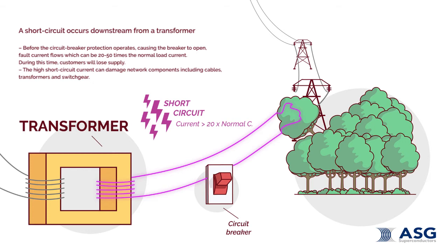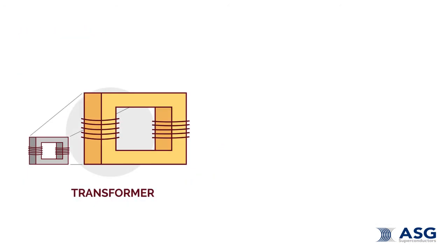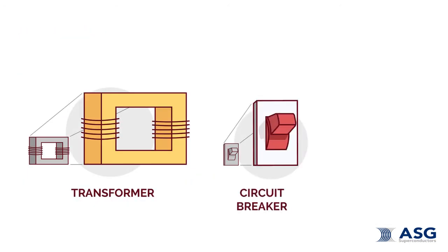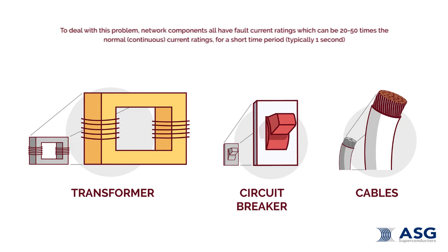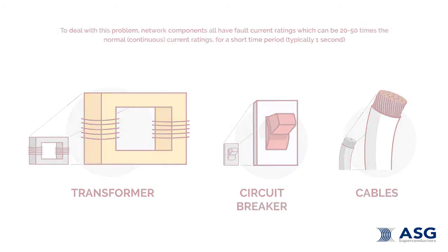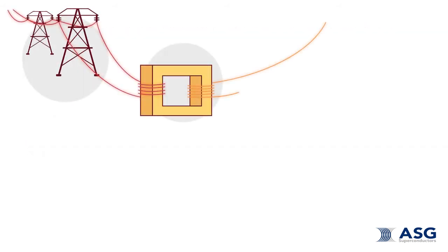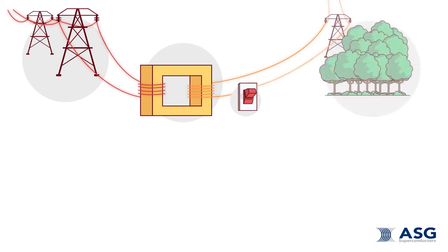The high fault current, if allowed to flow for too long, can damage network components including cables, overhead lines, transformers, and switchgear. To deal with this problem, network components all have fault current ratings which can be 20 to 50 times their normal continuous current rating for a short time period, typically one second.